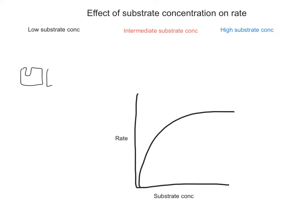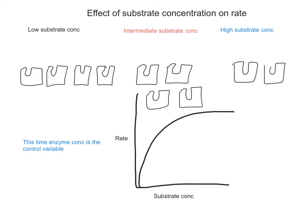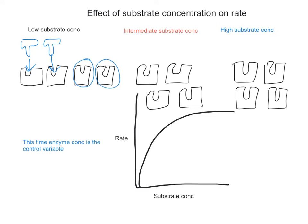Now I'm going to talk about how substrate concentration affects the rate of enzyme-controlled reactions. Similar to before, the enzyme concentration is our control variable — it stays the same each time, represented by four enzyme molecules. What's changing this time is the substrate concentration. I'm going to talk through each concentration level, colour-coded for clarity. At low substrate concentration, we've got four active sites but only two substrate molecules available to bind, leaving two further active sites empty.